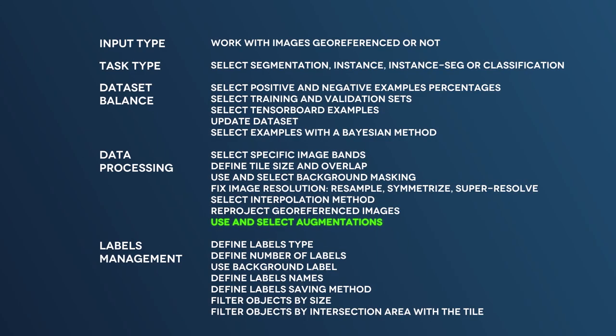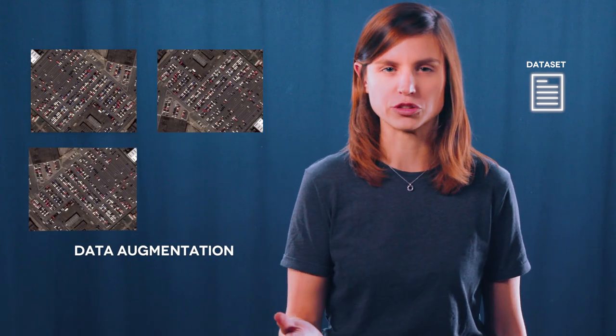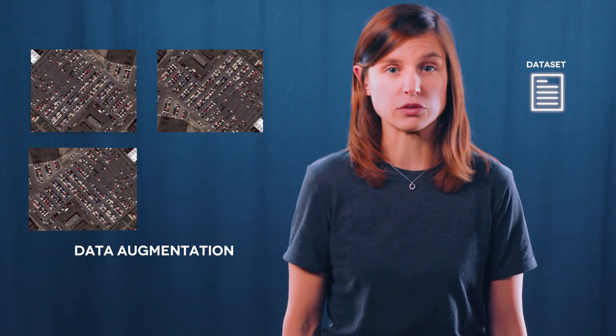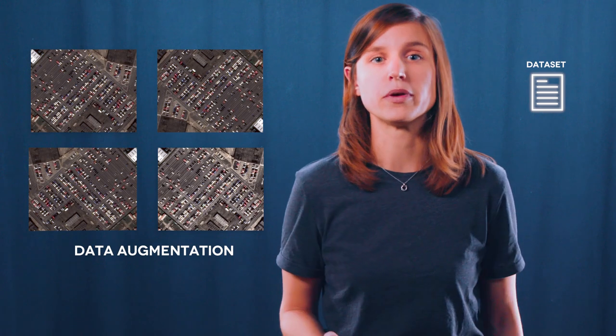In order to go further, you may want to use data augmentations. For instance, if you only have images of parkings orientated in a certain direction, you just need to rotate or flip some of your images. You may also add some radiometric diversity by using CLAHE or gamma transformation, or even add blur on some images.